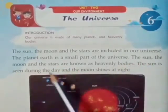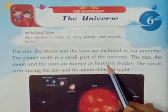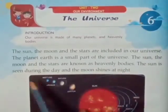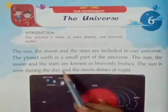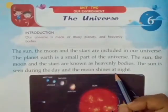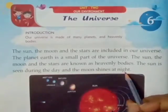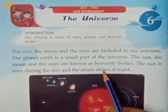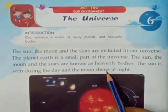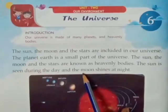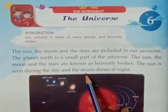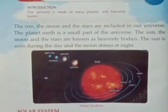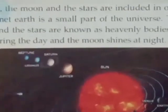The sun, the moon and the stars are known as heavenly bodies. Inko hum kya kehte hai sun, moon and stars ko? Heavenly bodies. The sun is seen during the day and the moon shines at night. Dinn me hame kya dixta hai? Sun, aur rata ko kya chamakta hai? Moon rata ko hotta hai, hai na? Yeh picture hai solar system ki.